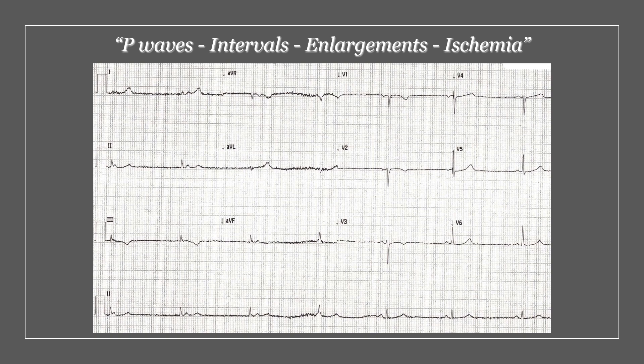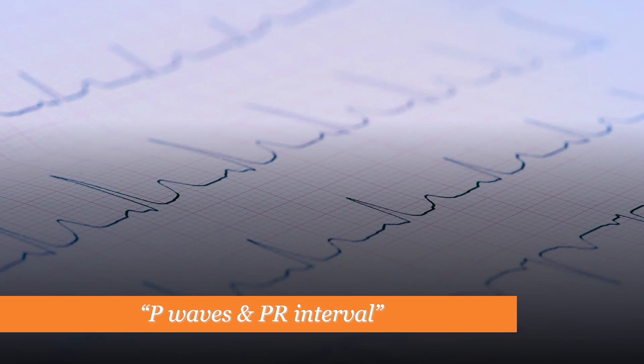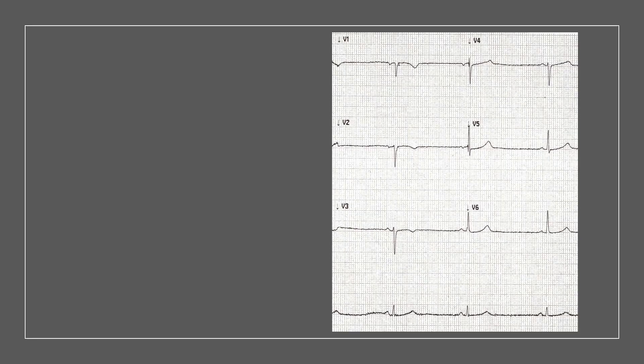That leaves us with the P waves and intervals. This ECG is really important, and I'm going to split it into two halves: the chest leads part and the limb leads part. Starting with the chest leads, we can clearly see a P wave followed by a complex, with a normal PR interval — same PR interval throughout. It's fixed. So I would call this part of the ECG just sinus brady.